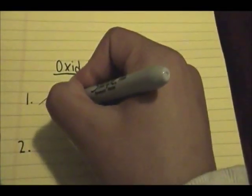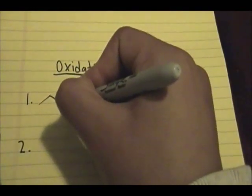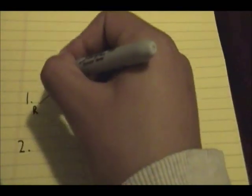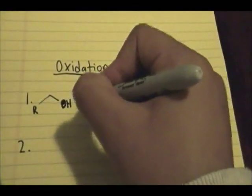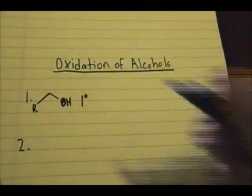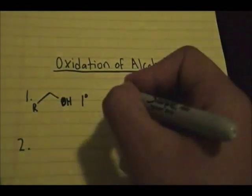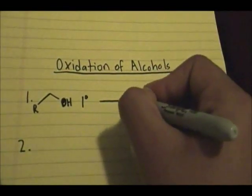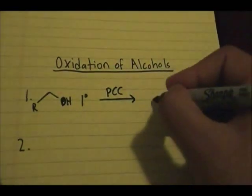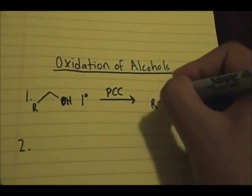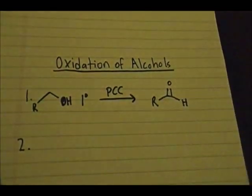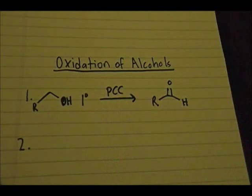If we have a primary alcohol and we use PCC, what we'll do is generate an aldehyde. We'll generate an aldehyde, and I'll show you the way I usually think about this in my head.